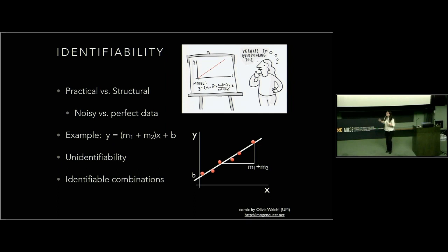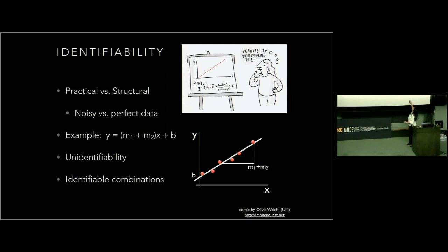The really silly example I use to explain this: suppose you're given some data and the model you propose is y = (m1 + m2)·x + b. It doesn't matter how good your data is — it could be perfect and exactly on a line. There's no way for you to estimate m1 and m2 separately, because all you can see is the overall slope of this line. There are an infinite number of ways to set m1 and m2 to get the exact same slope. That's a simple example, but it illustrates structural unidentifiability — it's baked into the structure of the model.